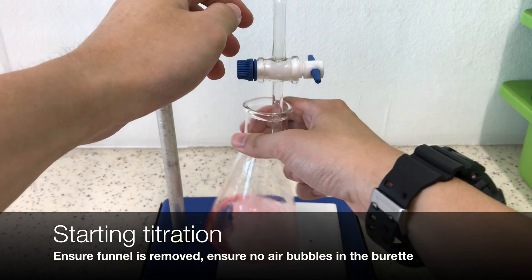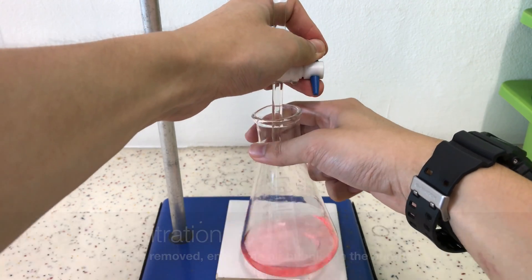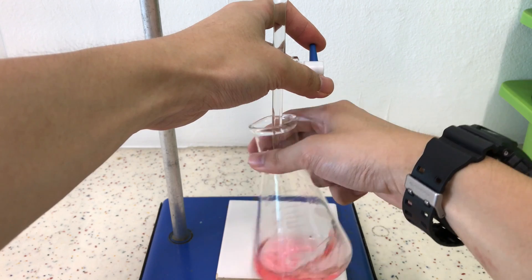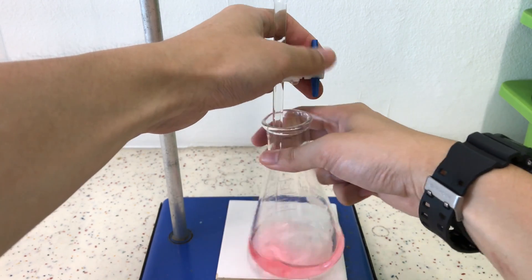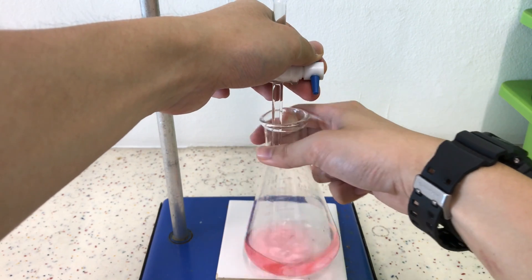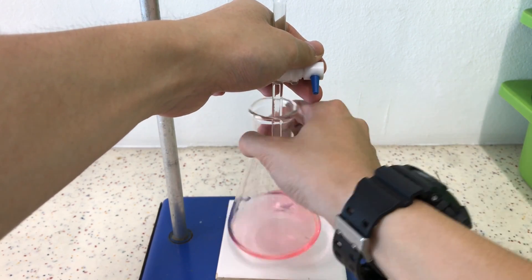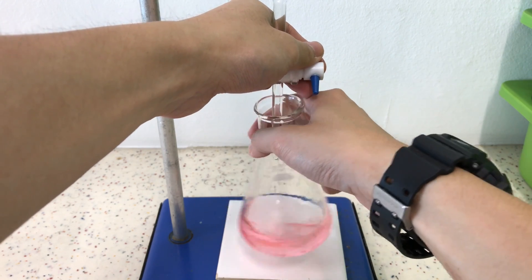Now here comes the fun part. To start the titration, we will swirl the conical flask in one hand and in the other hand we open the tap to allow the titrant to flow into the conical flask. In the beginning of the titration, we can add the reagent rather quickly with constant swirling.